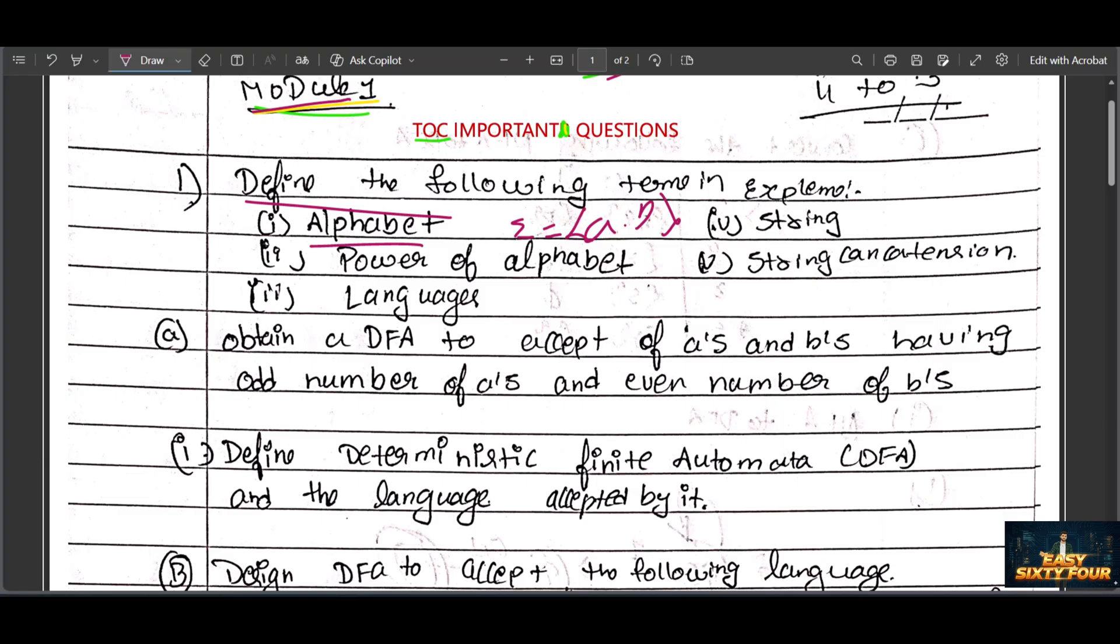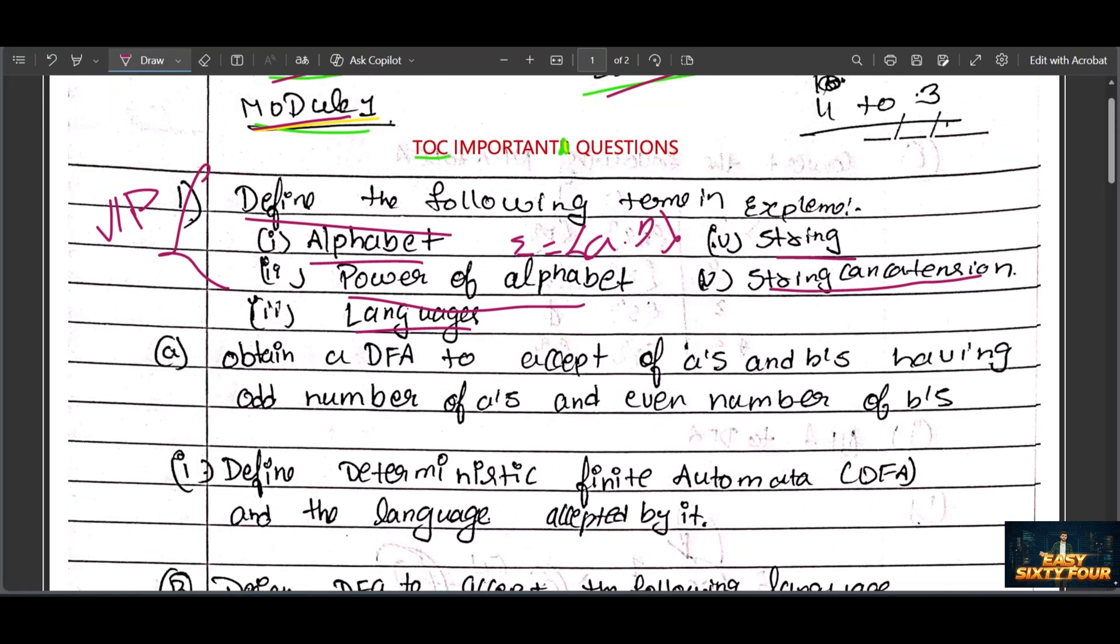After that, power of alphabet - also an easy question. Language means subset, string means concatenation. If you want to pass, please read the string concatenation question. It's a very important question because it's asked many times in question papers. This is part A, a more important question with examples.